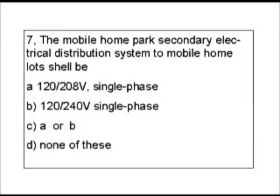Question 7. The Mobile Home Park Secondary Electrical Distribution System to Mobile Home Lots shall be: A. 120-208 volt single phase. B. 120-240 volt single phase. C. A or B. D. None of these.